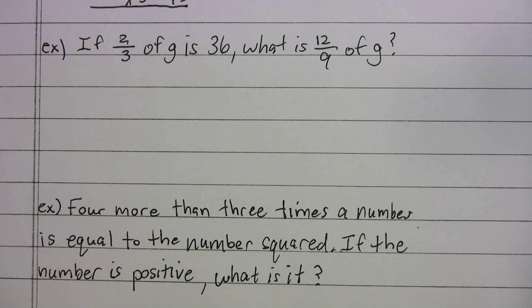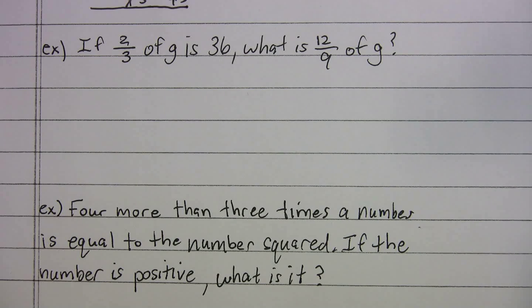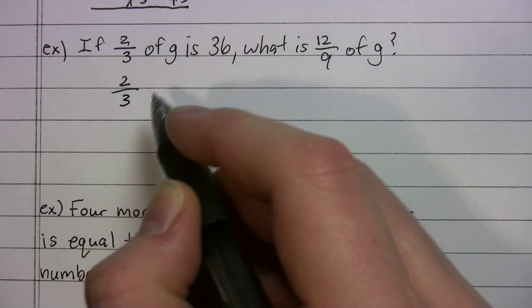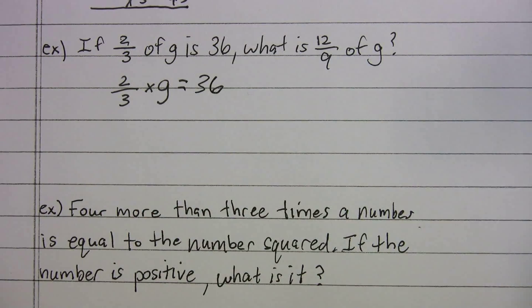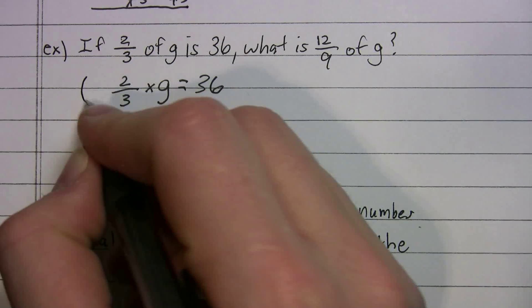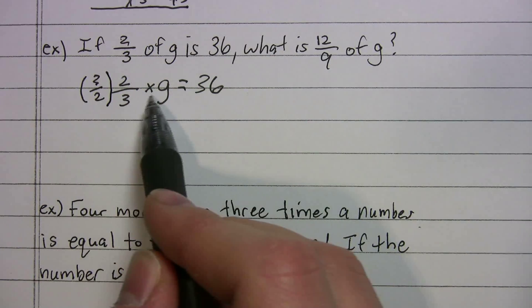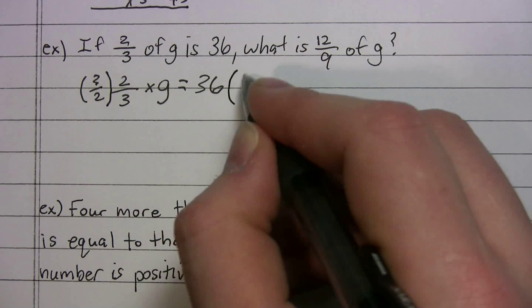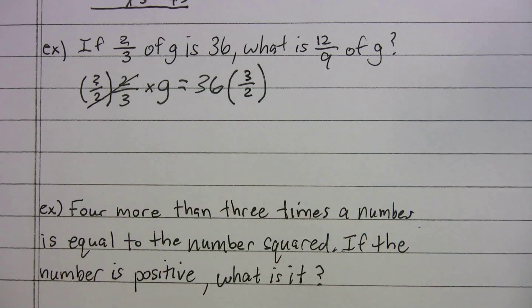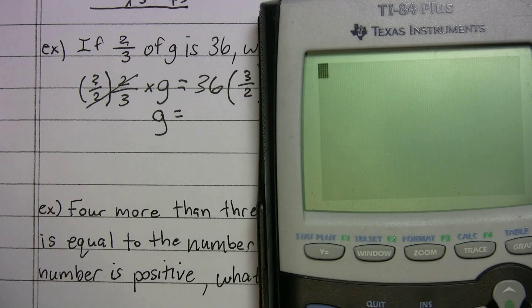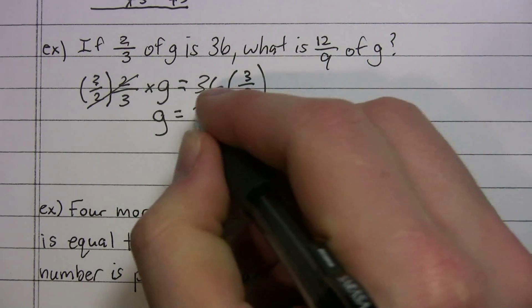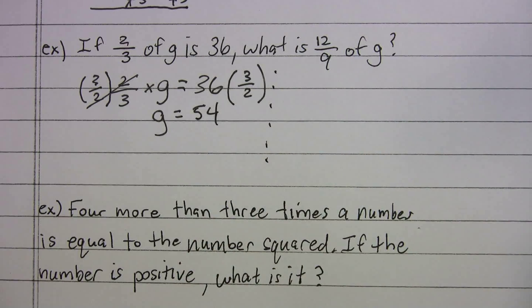The second problem says: 'If two-thirds of G is 36, what is 12/9 of G?' We translate left to right: (2/3) × G = 36. To get rid of the 2/3, multiply both sides by its reciprocal, 3/2. That turns the left side into 1, and G equals 36 times 3/2. Using a calculator, G = 54.